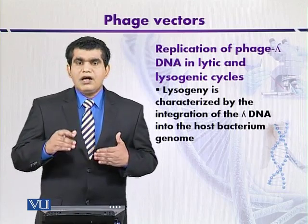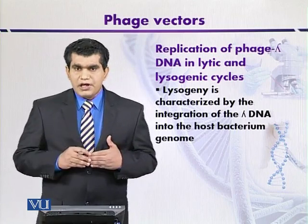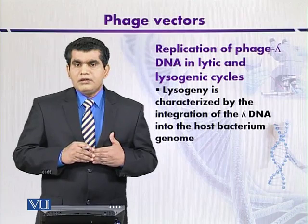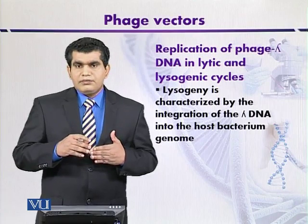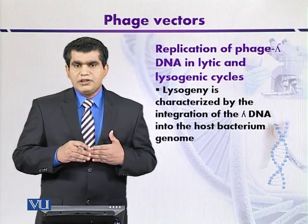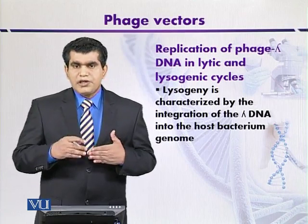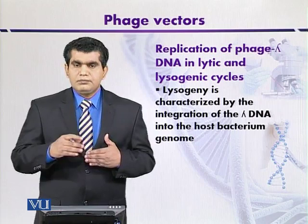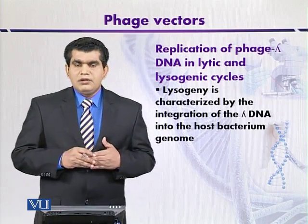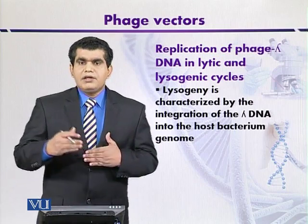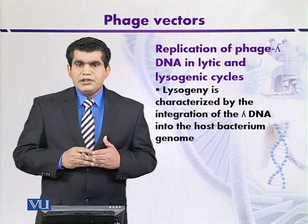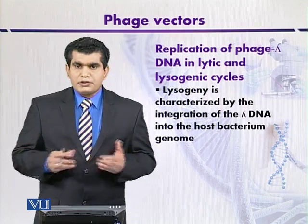Once the early genes are transcribed, it is followed by the transcription of middle genes that are mainly related to gene products involved in the replication and recombination of DNA. At later stages, tail and other structural components are produced.